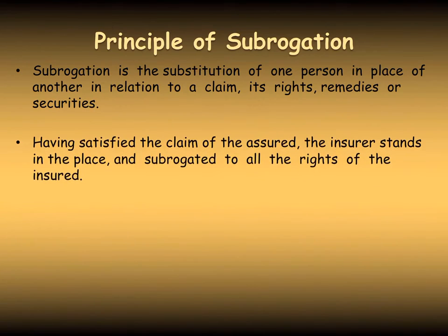So having satisfied the claim of the assured, the insurer stands in the place of and is subrogated to all the rights of the insured. The insurance company satisfied the claim of the policy holder. The insurance company cannot deny the contract by saying that the loss was caused to the policy holder by the act of some third party.